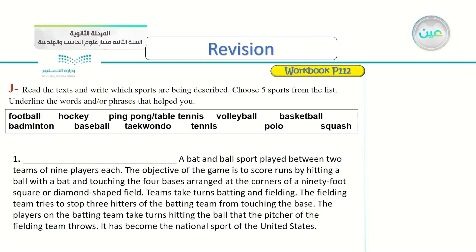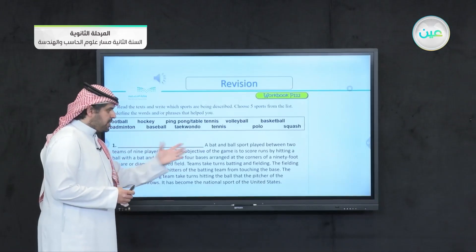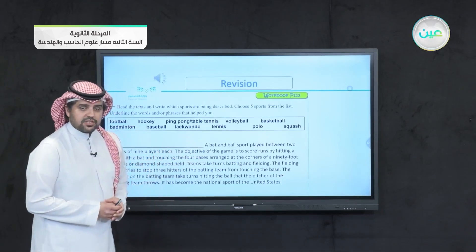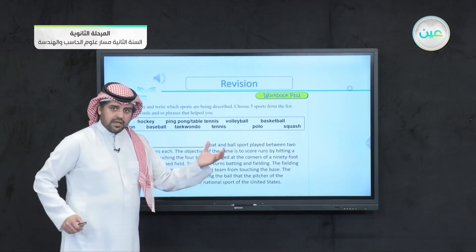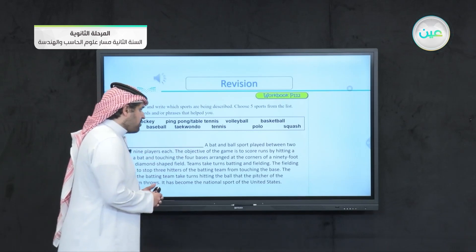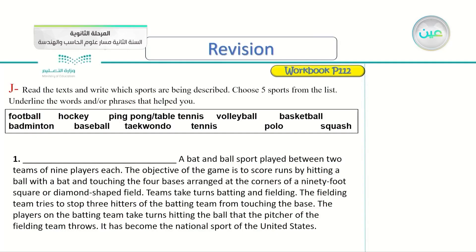So I think just from the first two or three words here — a bat and a ball — which sports use a bat? It says a bat and a ball sport played between two teams of nine players each. So the first one is baseball. As I said, from the beginning when it says a bat and a ball, I think it became very obvious.